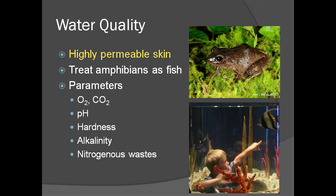As discussed in other modules, amphibians have highly permeable skin. This feature means that solutes in the water surrounding the amphibian are likely to also be found within the animal. So when discussing water quality parameters, amphibians can be thought of as fish — the same attention to detail and excellent water quality required to keep fish healthy is also required for amphibians.